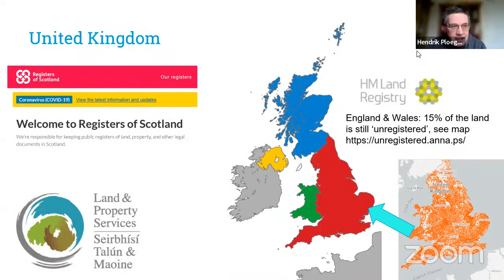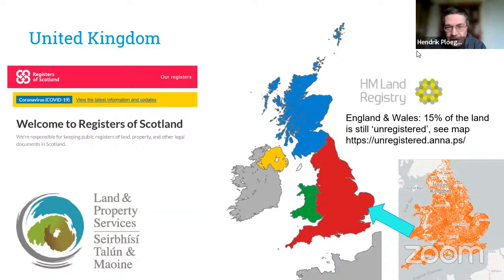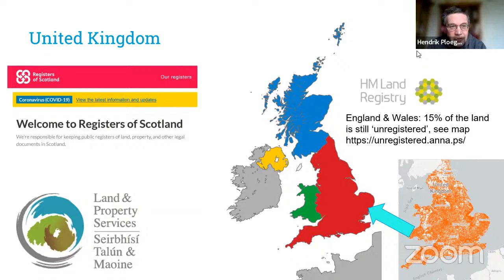Another illustration is the United Kingdom — showing both change and different systems within one country. The UK comprises Scotland, England, Wales, and Northern Ireland. The Land Registry is responsible for England and Wales. Scotland has its own registers, and Northern Ireland — the part of Ireland that belongs to the United Kingdom — has also its own registration called the Land and Property Services. So three systems within one country.